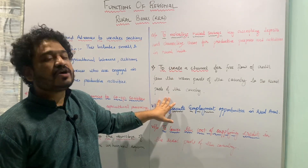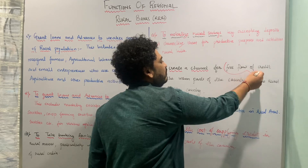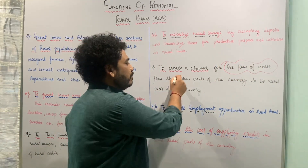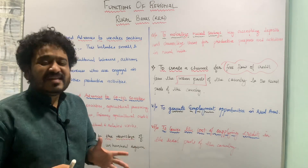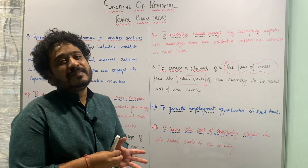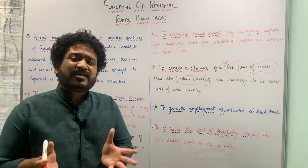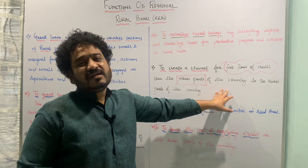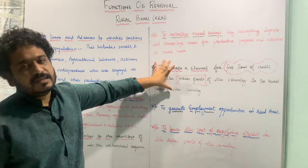The next function is to create a channel for free flow of credit from the urban parts of the country towards the rural parts of the country. The regional rural bank ensures that surplus from the urban parts of the country is channelized towards the rural parts of the country in a free manner.